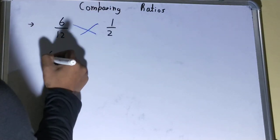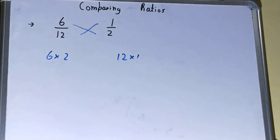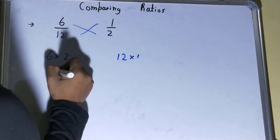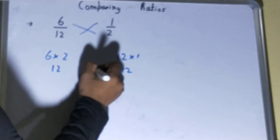Okay, so we can do 6 into 2 and 12 into 1, and we'll see which value is bigger, which value equals which value, is less than. So the result will be 12 over here and the result will be 12 over here. So we can see both the values are equal to each other.